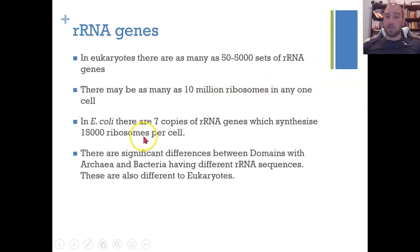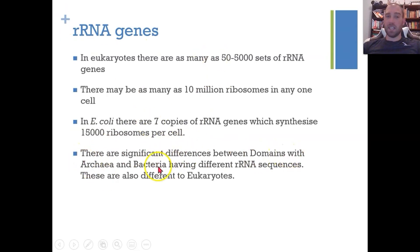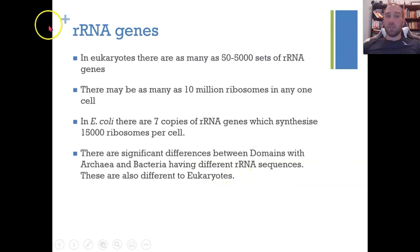In eukaryotes, there can be 50 to 5,000 sets of ribosomal RNA genes, and as many as 10 million ribosomes per cell. In E. coli (a bacterium), there are seven copies of the ribosomal RNA genes, synthesizing 15,000 ribosomes per cell. This is useful because there are significant differences between domains — archaea, eubacteria, and eukaryotes all have different ribosomal RNA sequences — so comparing them reveals how long ago common ancestors were shared.